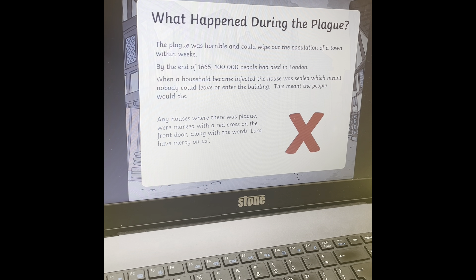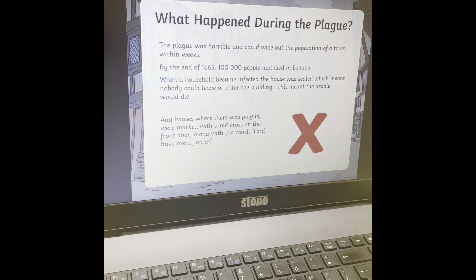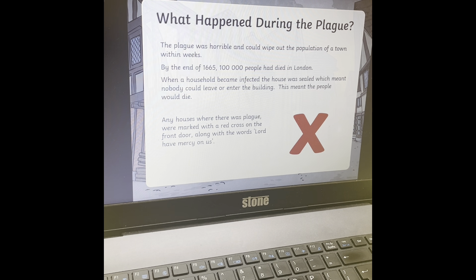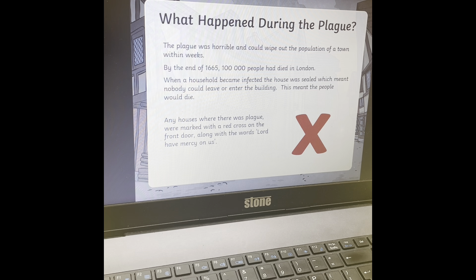The plague was horrible and it could wipe out towns and cities within weeks. As soon as one person in the town got it, it spread very, very quickly. This meant that people had to stay in their household — if they got infected, they'd have to stay in their own home and weren't allowed out, a bit like us right now having to social distance and self-isolate. In the past with the plague, people used to put red X's on their door so that nobody else would come in.